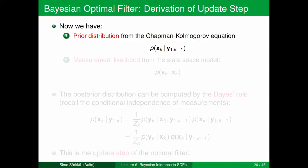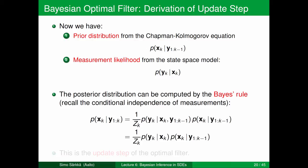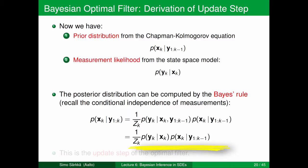We now have the prior distribution from the Chapman-Kolmogorov equation and the measurement likelihood given in the state space model. Using Bayes' rule we compute p(xk | y1:k). First we use the general Bayes rule in a more generic expression, but then conditional independence reduces this to the product of the likelihood times the prediction step result, normalized with respect to xk. This is the update step of the optimal filter.